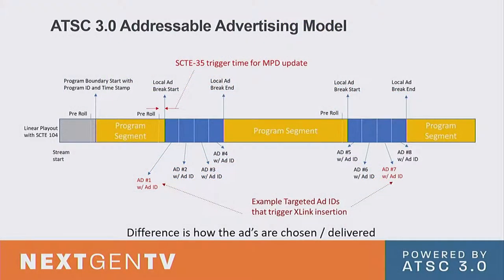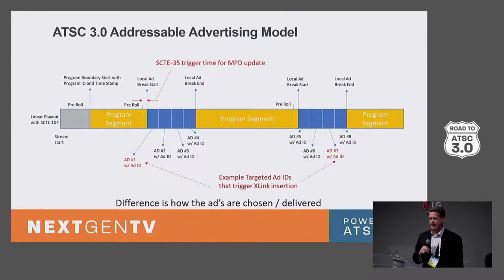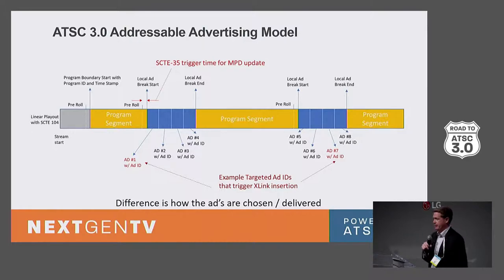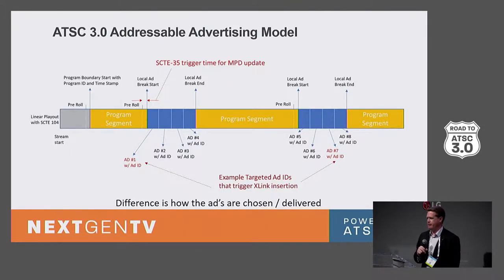It's the same concept, but instead of having a pre-roll, now we have the SCTE 35 trigger an MPD update. In this example, ad ID number one and ad ID number seven are highlighted in red — that's an example of where a specific ad can be addressable to a user. The difference is how the ads are chosen and delivered. Before, the broadcaster was in control; now the user can be in control of what ads they see.